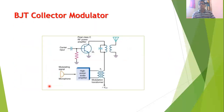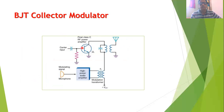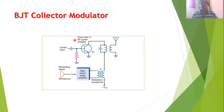Let us now look at the circuit diagram of the BJT collector modulator. This circuit consists of a bipolar junction transistor Q1, of which the emitter terminal is grounded. The high frequency carrier signal is applied through a filter circuit to the base of the transistor. The transistor is biased so that it works as a class C radio frequency power amplifier. The collector of the transistor is coupled to a tuned circuit formed by an inductor and a capacitor.